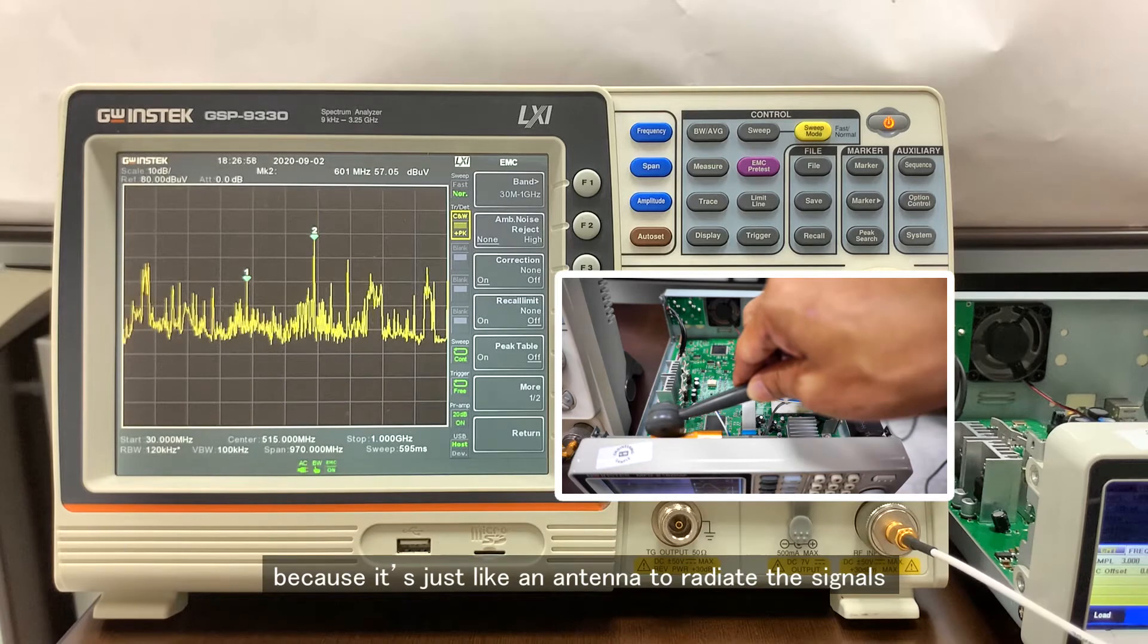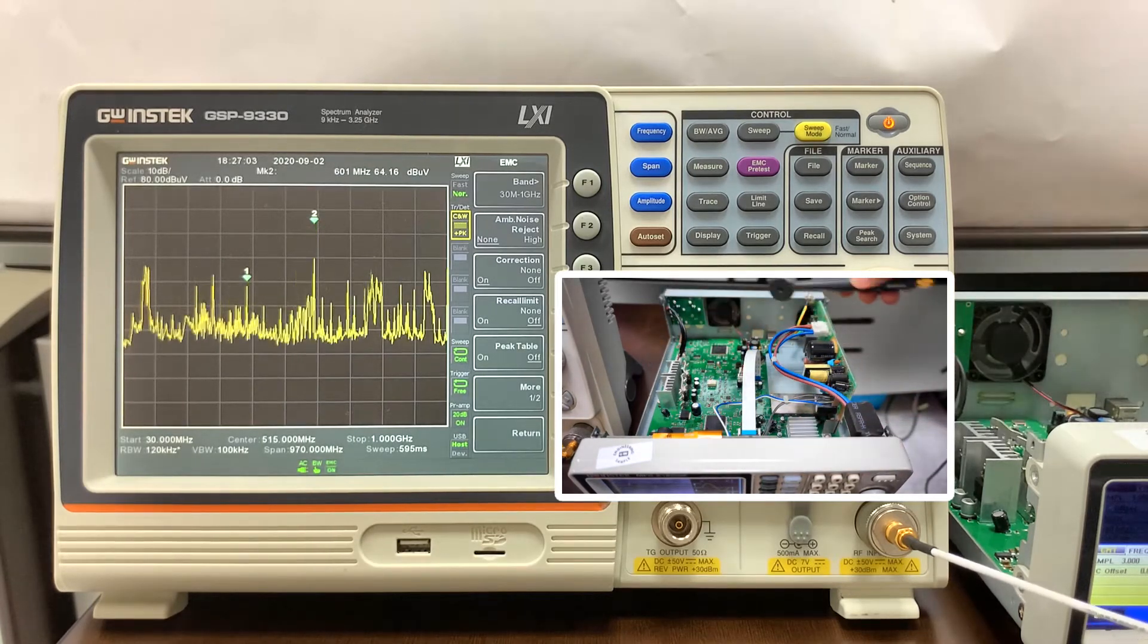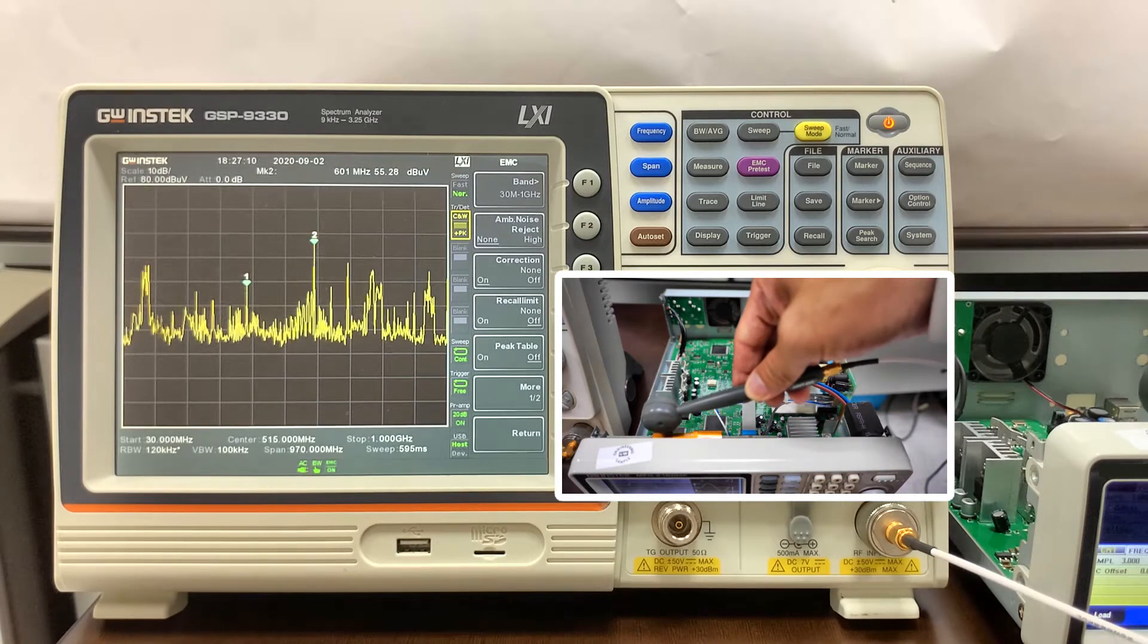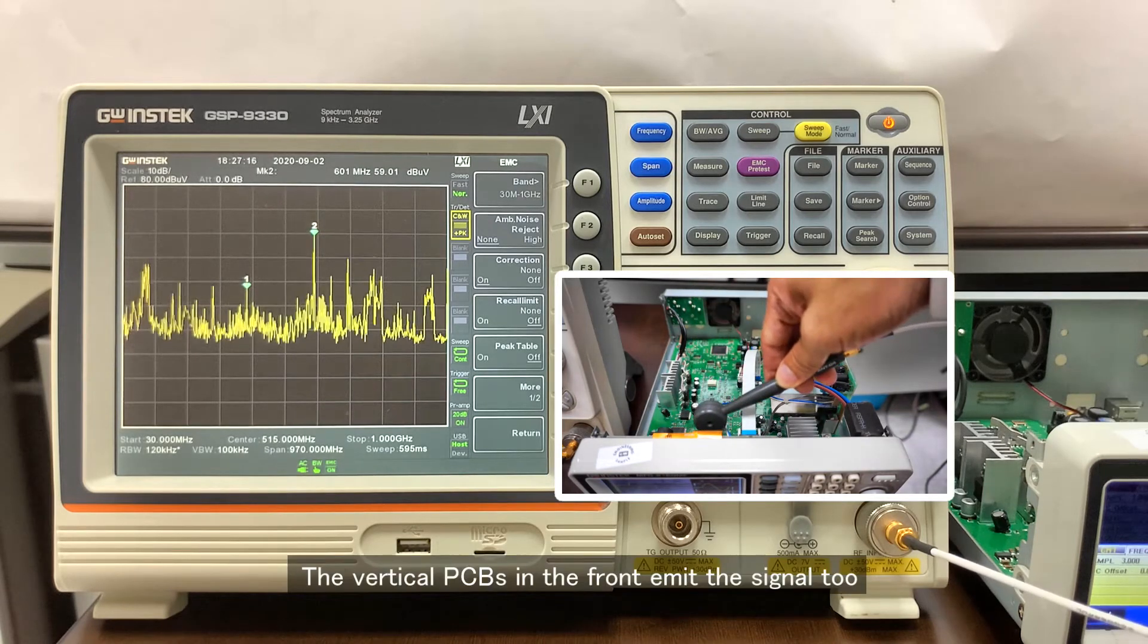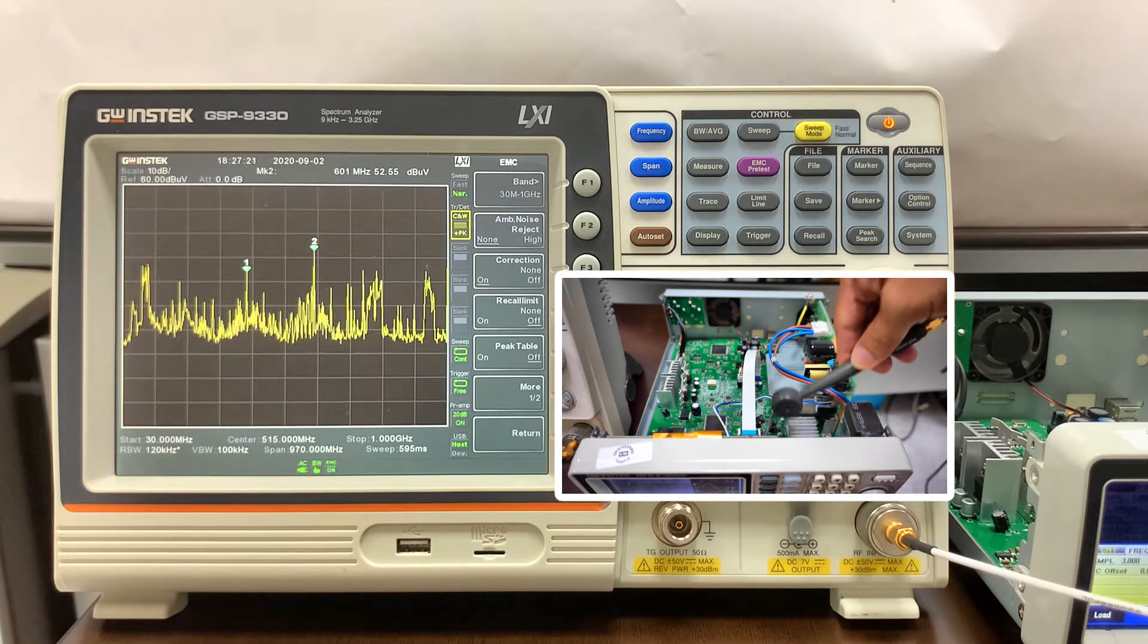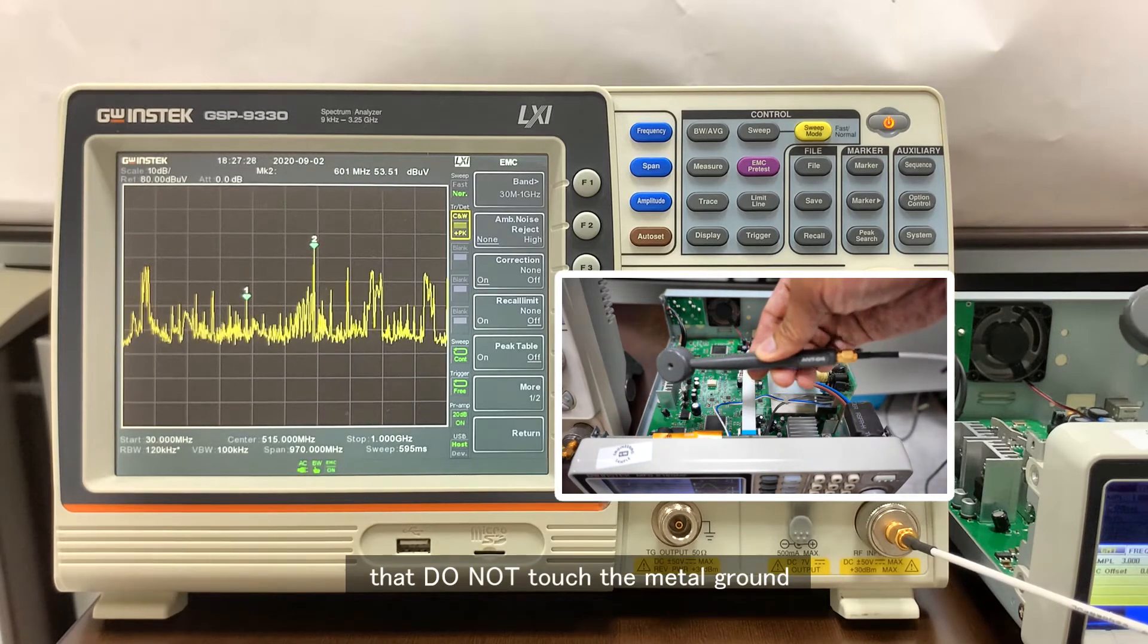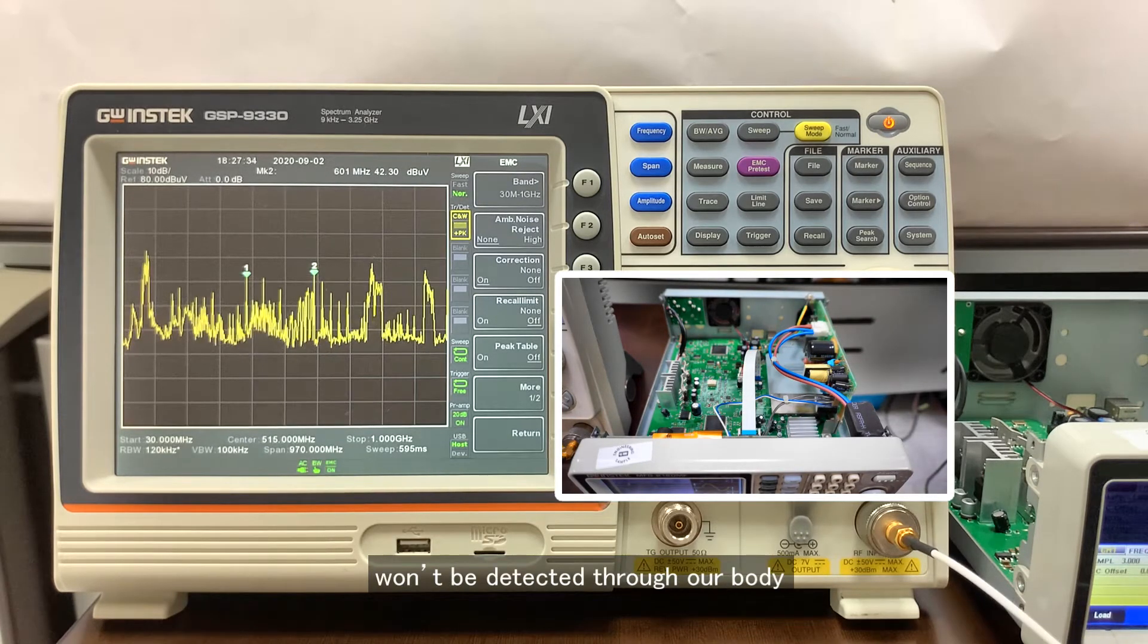The flat cable is strong because it's just like an antenna to radiate the signals. The pulse action is not so strong. The vertical PCB board in the front emits the signal too. Here we need to be careful that do not touch the metal ground of the probe or cable while using it, so those unnecessary signals won't be detected through our body.